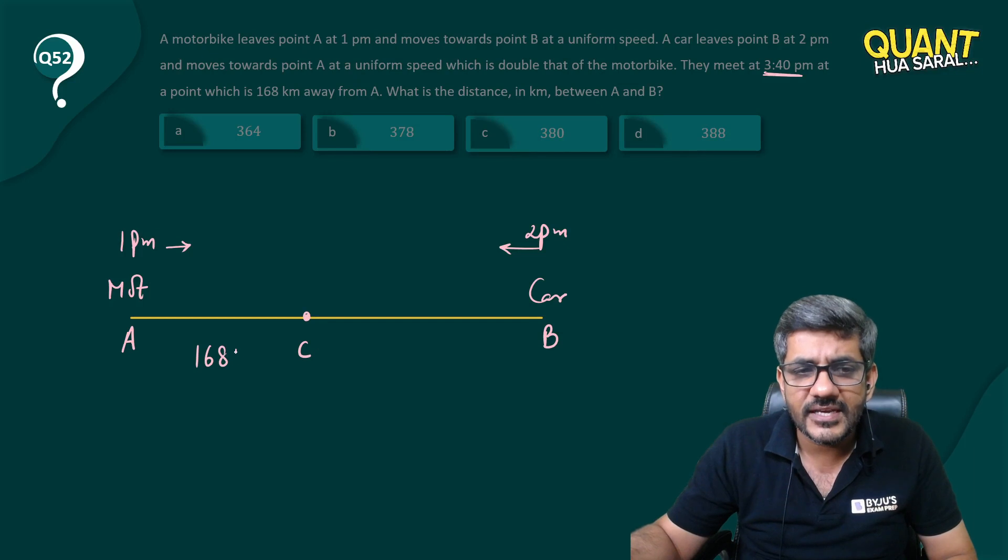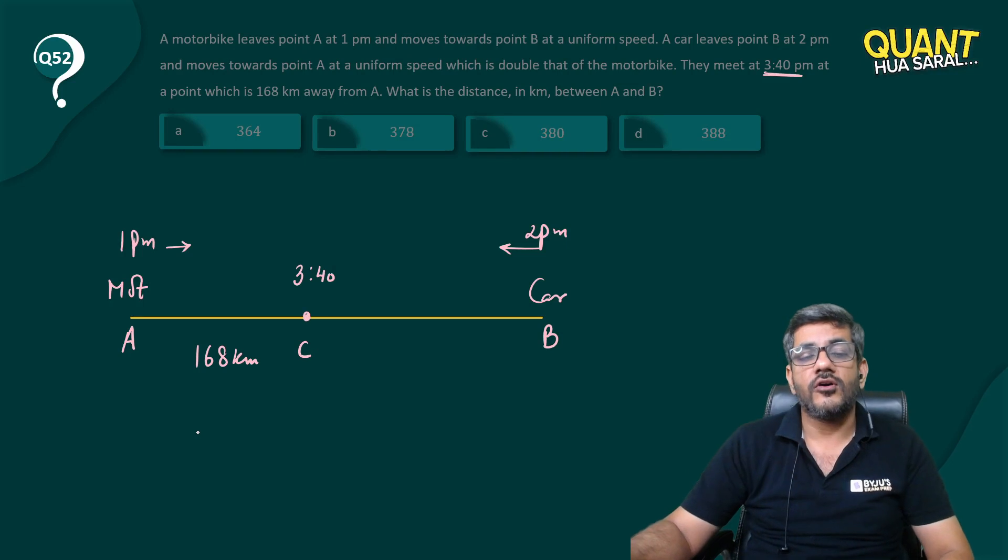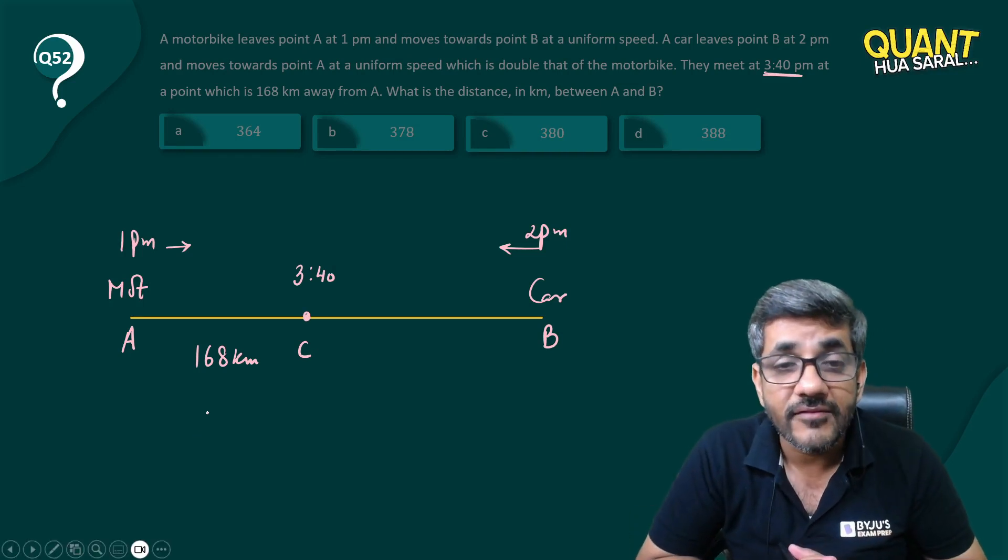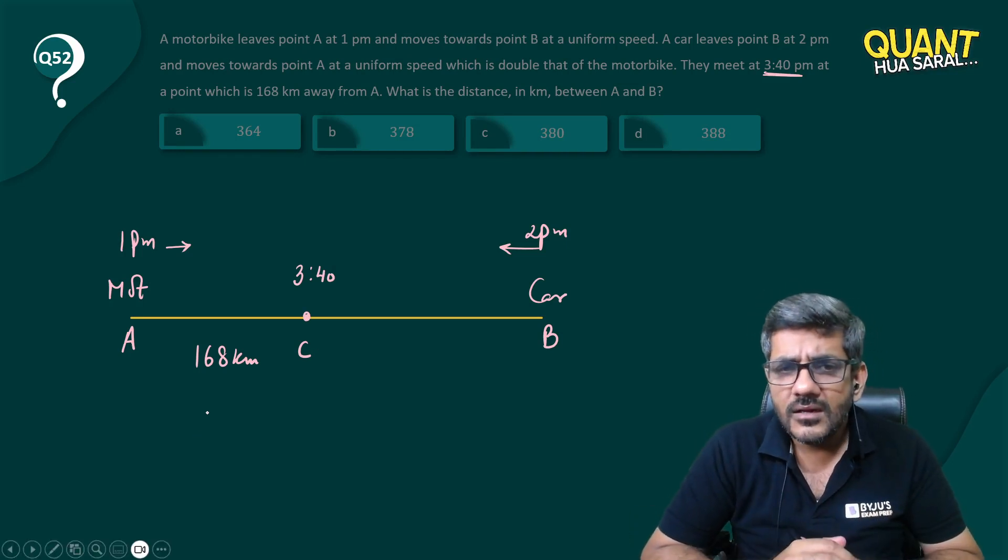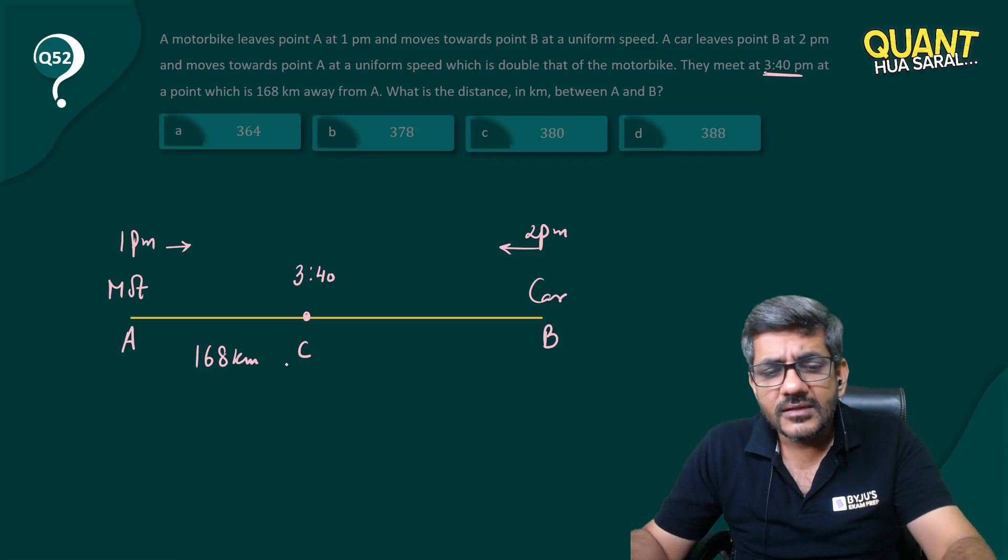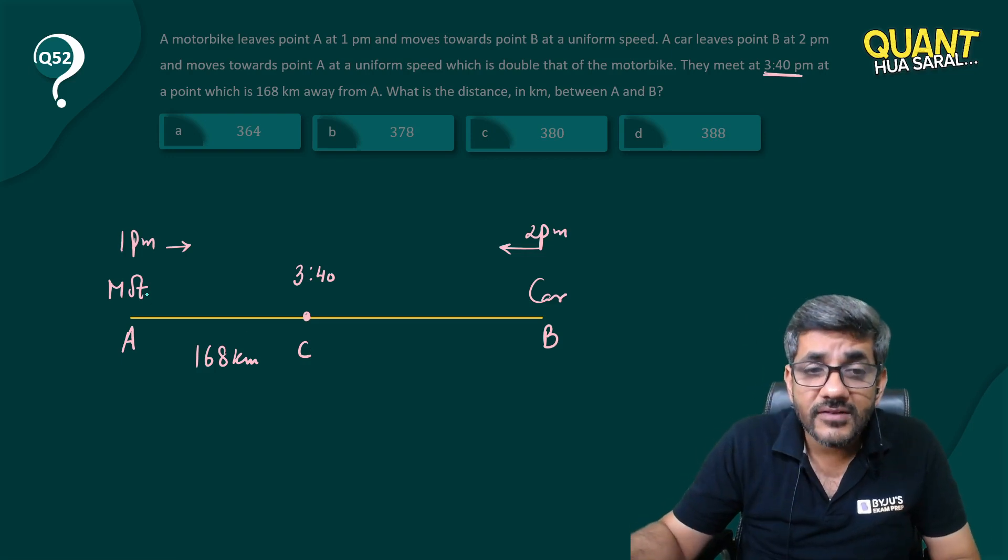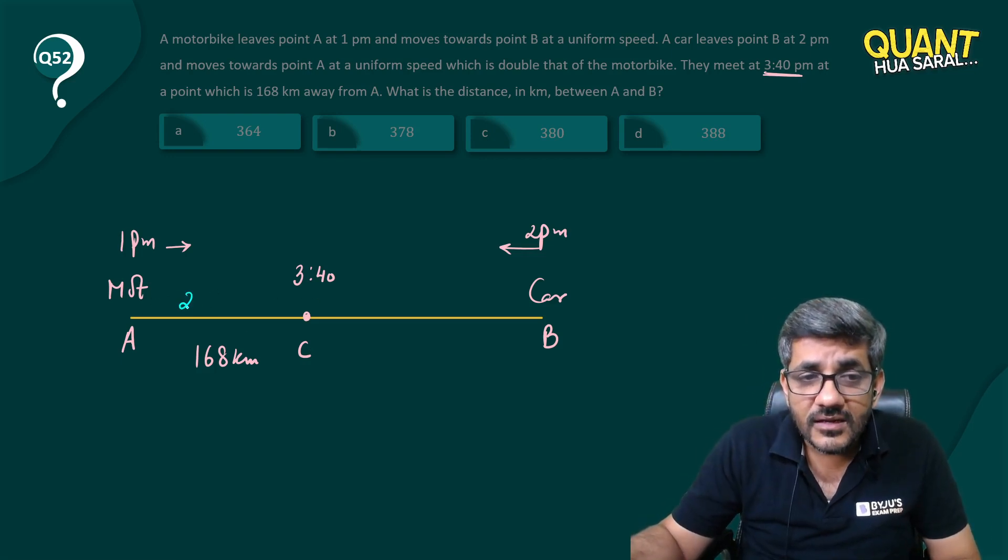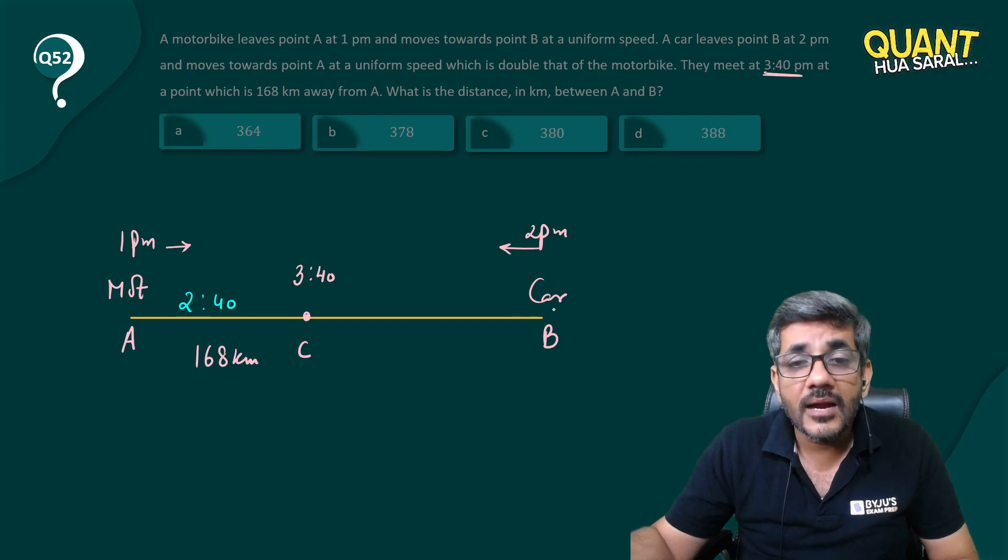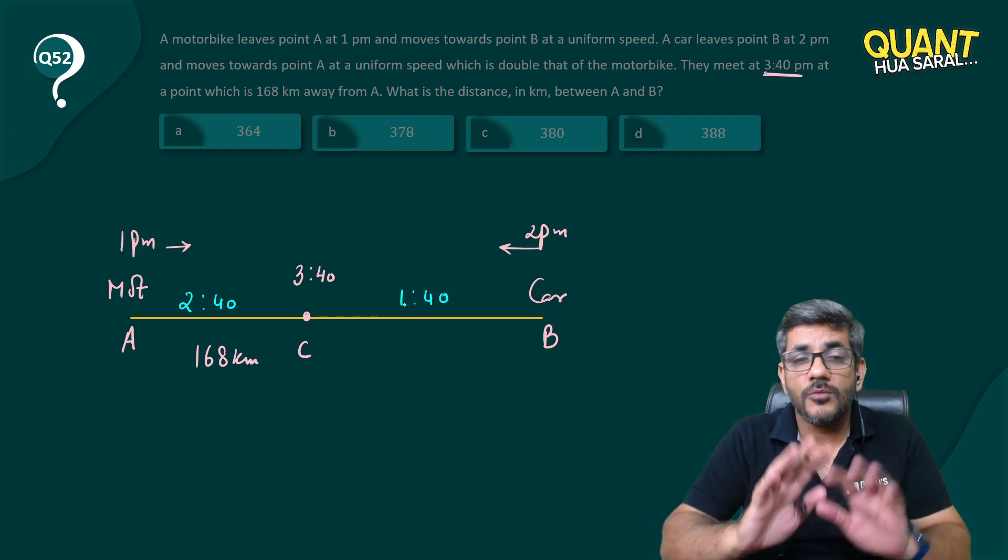They meet at this point at 3:40. Now can I straightaway say that A must have covered this distance in 2 hours and 40 minutes, and B must have covered this distance in 1 hour 40 minutes? I hope you agree with that. 3:40 is the meeting time. A started at 1, so 3:40 minus 1 equals 2:40 is the time taken by him. Similarly for B, 3:40 minus 2 equals 1:40 is the time taken by him.